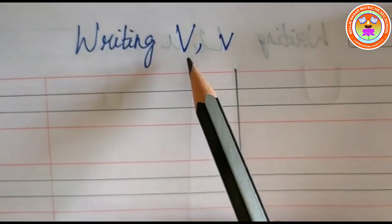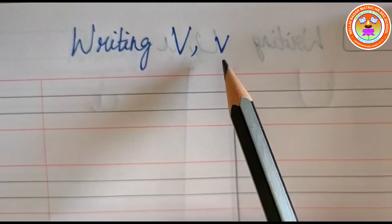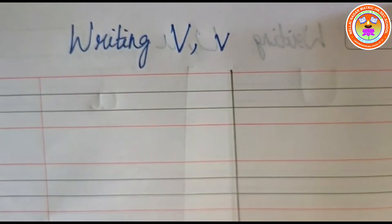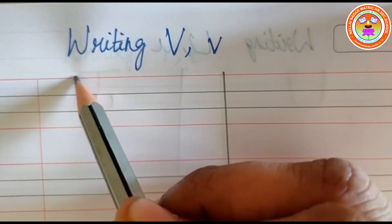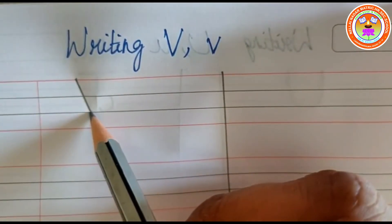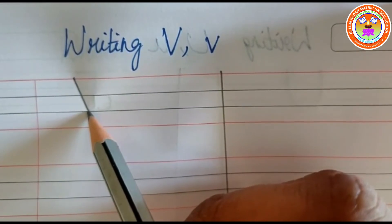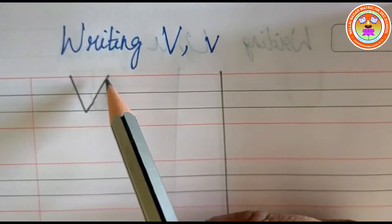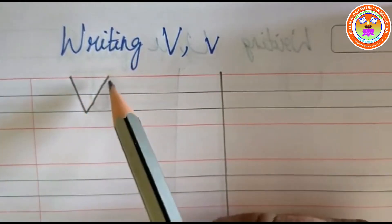This is capital letter V and this is small letter V. For writing capital letter V, touch on the first red line and then put one slanting line like this. You have to come and stop it on the second blue line. Again from here you have to go up and put one slanting line, touching the first red line like this. This is capital letter V.